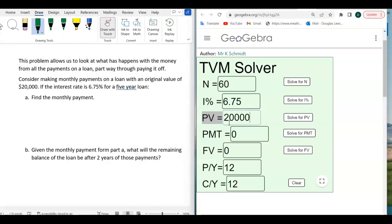We're trying to find the payment, so at the very beginning of this loan, it was $20,000. The future value of the loan should be 0, and so we'll solve for the payment.